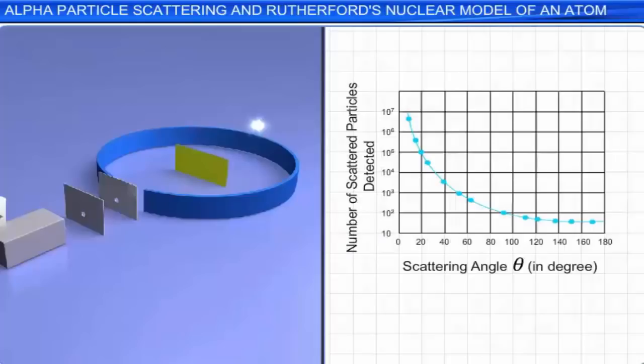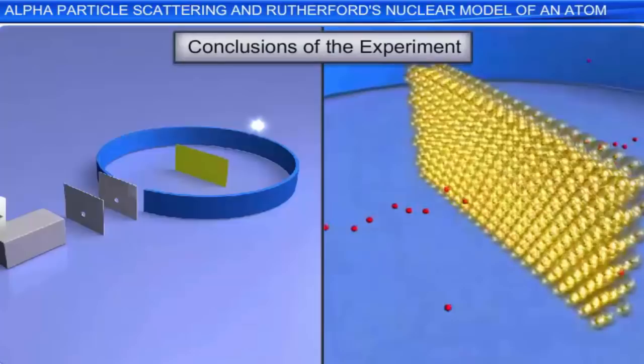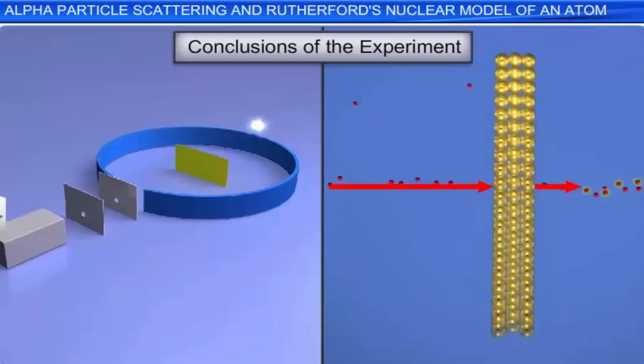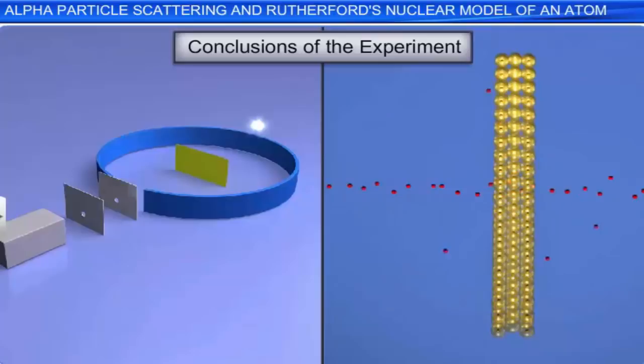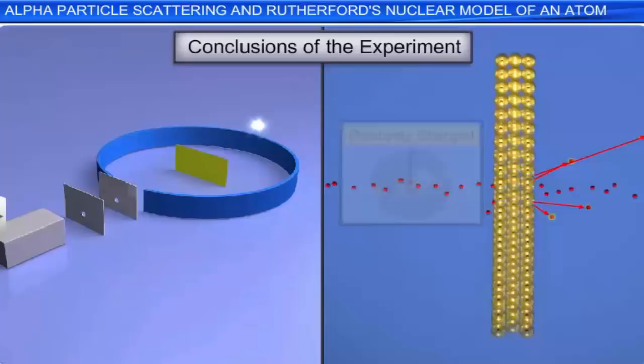Based on the data from the graph, Rutherford made the following conclusions. The number of particles for nearly zero angle of scattering was very large, indicating that most of them had passed almost straight through the gold foil. This implied that most of the atom must be empty. Out of all incident alpha particles, only about 0.14% scattered by more than one degree, due to passing close to the central part of the atom which must be positively charged. And one in 8000, that is about 0.0125%, scattered by more than 90 degrees — they scattered backwards.